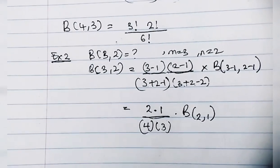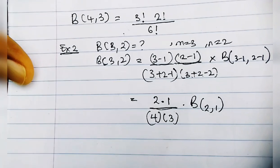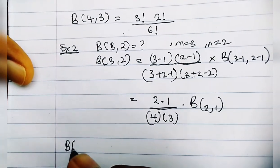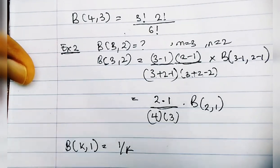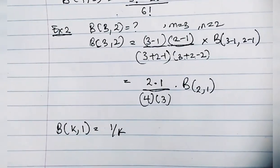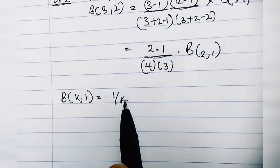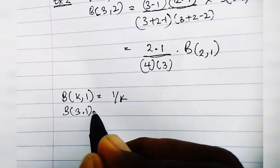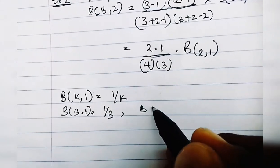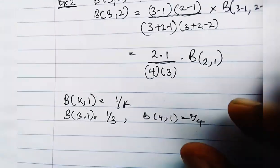Actually, it's not only for Beta(2,1) — the general form is that Beta(k, 1) = 1/k. So Beta(2, 1) = 1/2, Beta(3, 1) = 1/3, Beta(4, 1) = 1/4, and so on. Going back to our question...